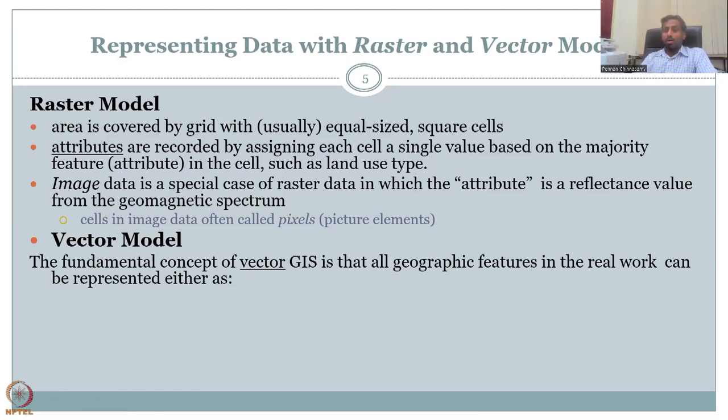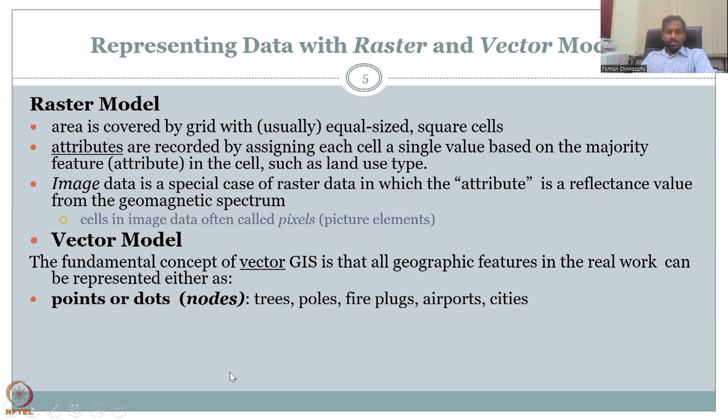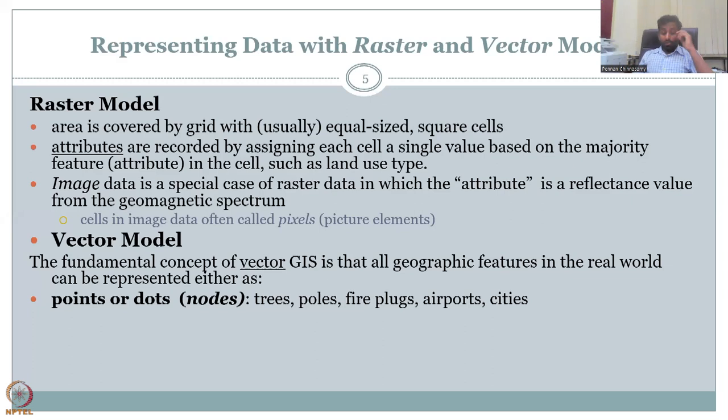In a vector model, the fundamental concept of vector GIS is that all geographic features in the real world can be represented either as points or dots, nodes, trees, poles, fire plugs, airport cities, like they are as points. So imagine we have, I'll just check if the software has been updated. It's still running. So let it run. You can see it here. So what we will do is, we will have more. So we have more points or dots representing trees, poles, fire plugs in the vector model. So in the meantime, I have noted that the software has downloaded successfully.